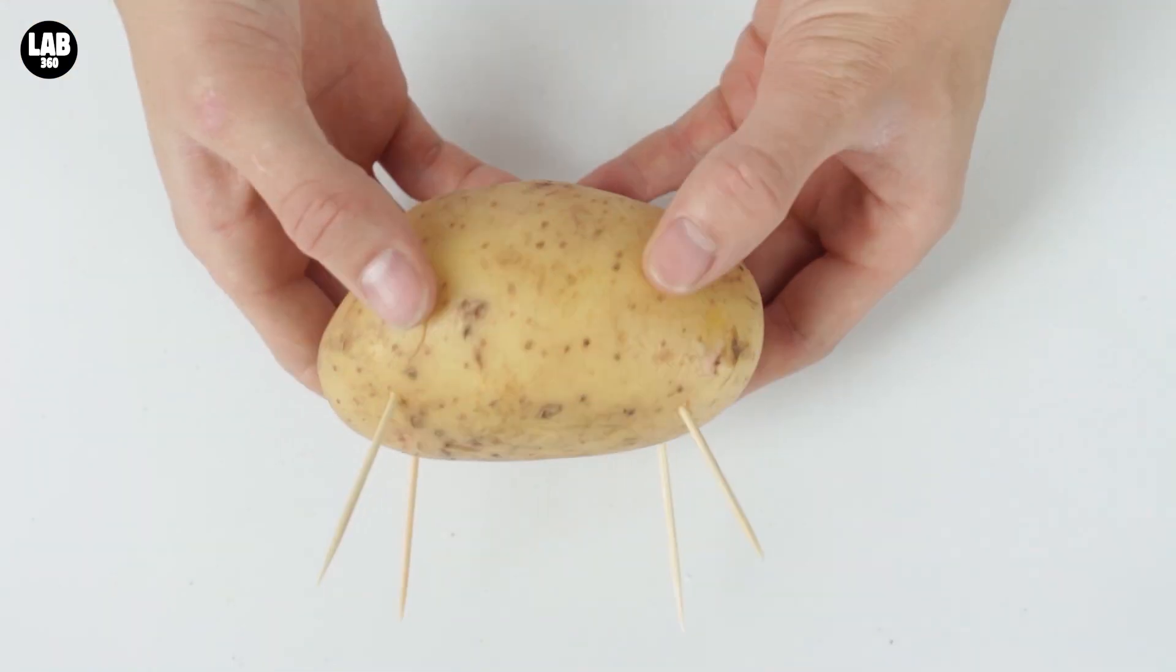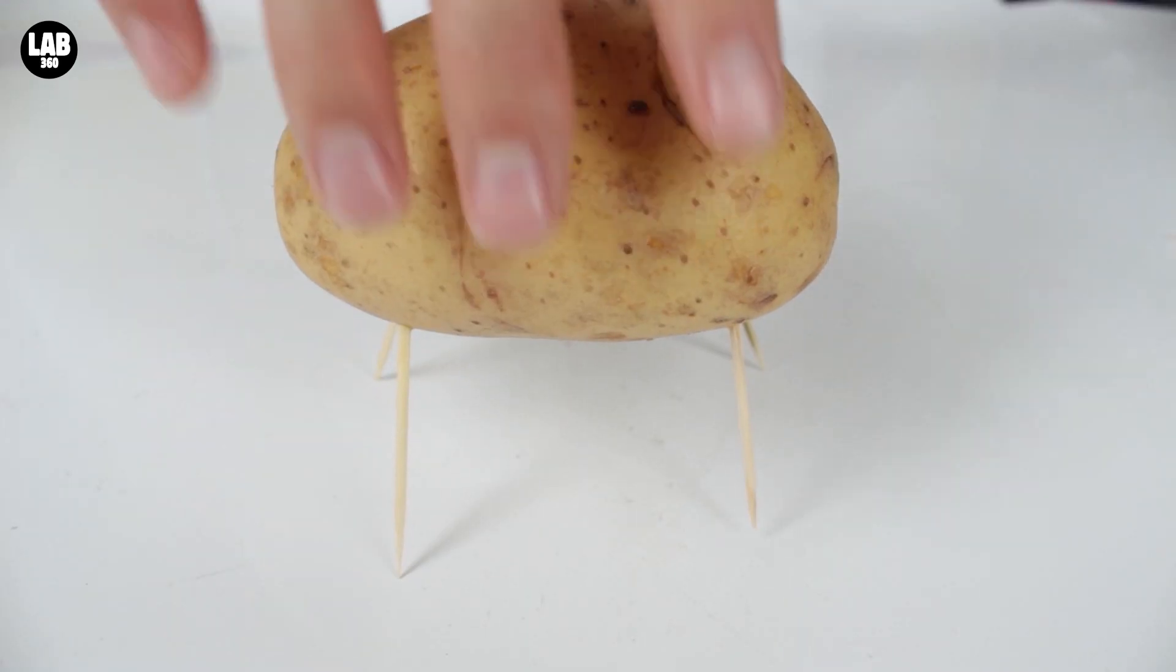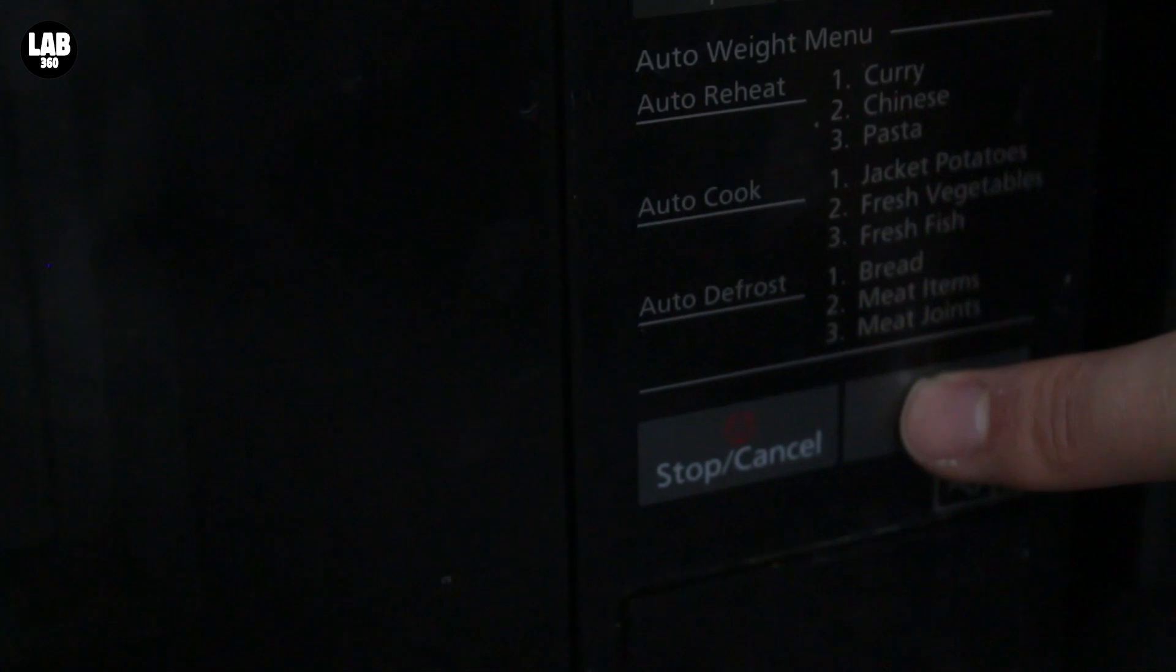Take four toothpicks and pop them through a potato like so to make legs. Now you can pop your potato in the microwave and make sure that it's evenly cooked on all sides. Delicious!